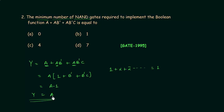Now you have to find the minimum number of NAND gates required to implement this function. I'm not going to write down the answer — this is a homework problem for you. Once you have the answer, post it in the comment section. See you in the next one.